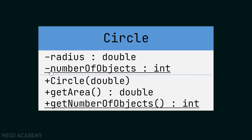After the separator we have the methods. The plus symbol means the method is public, while minus indicates private. So this public method is called Circle and it takes a double as a parameter. We didn't specify a return type — obviously this is a constructor because it shares the class name. This constructor takes one parameter of type double. Note that we don't specify the name of the parameter; we only put the types.